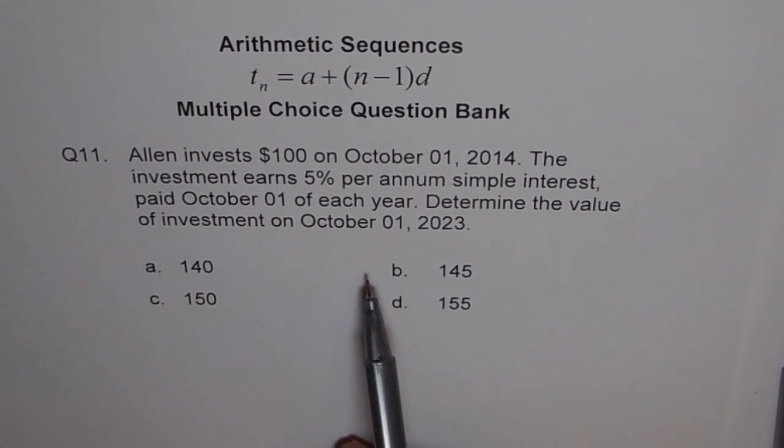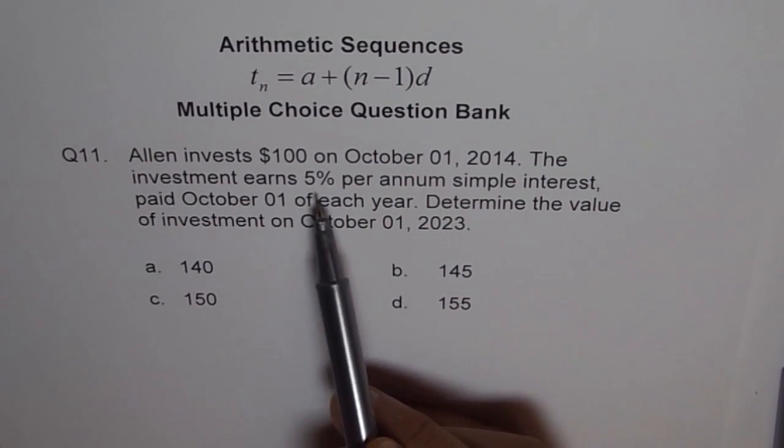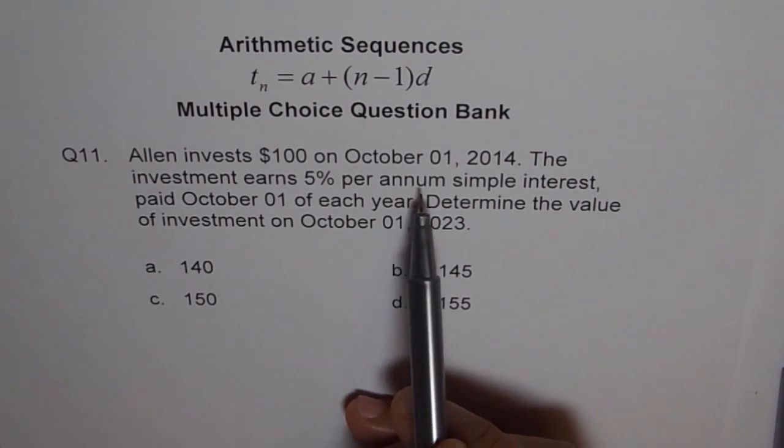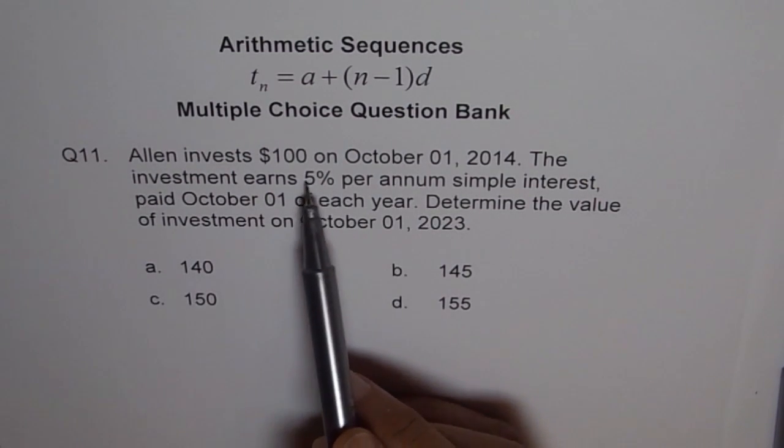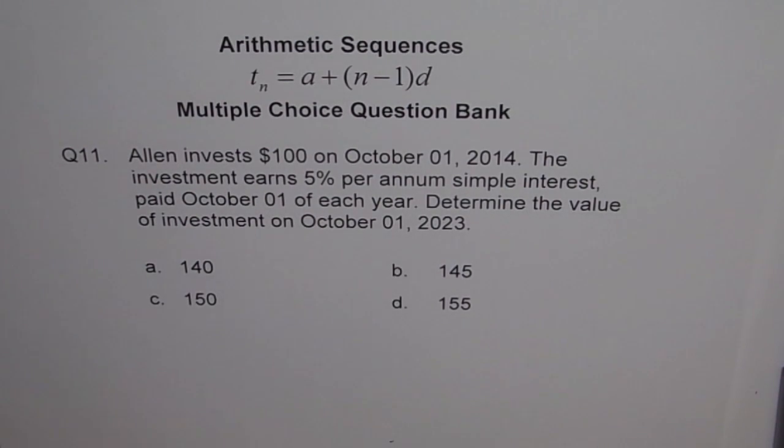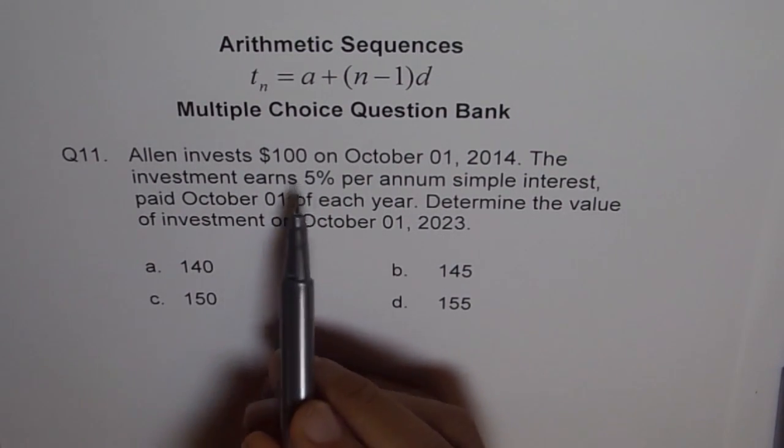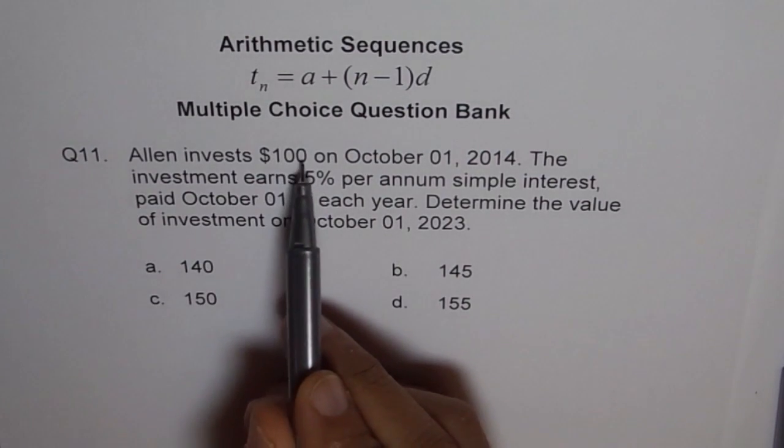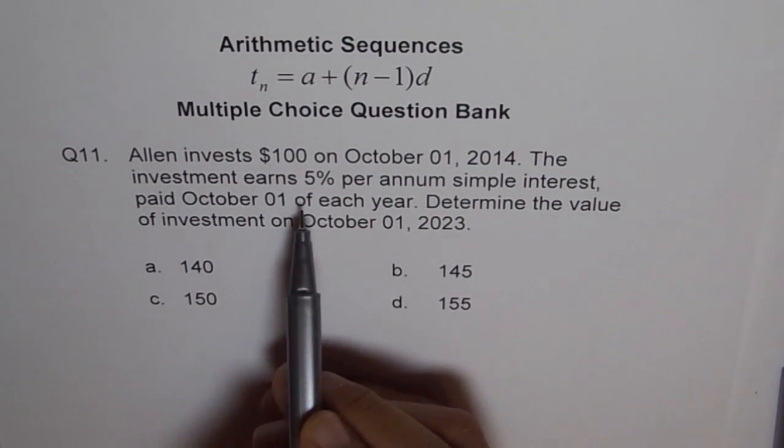When we say that simple interest is earned and the rate of interest is 5% per annum, it means in one year, 5 out of 100. So the interest earned will be $5 every year. 5% per annum means 5% of investment. Investment is $100, so 5% of $100 is $5.